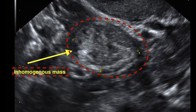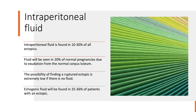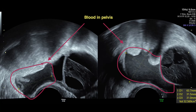The next sign is the presence of intraperitoneal fluid, which is found in 10-30% of all ectopic pregnancies. Echogenic fluid is found in 25-36% of patients with ectopic pregnancy, as shown in this picture, which is suggestive of blood and fluid.